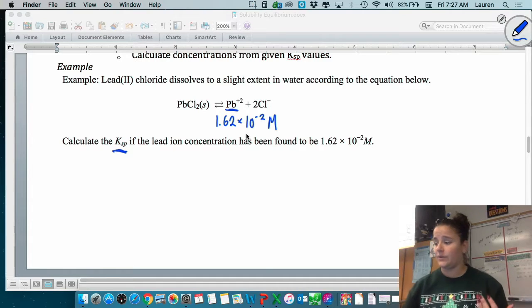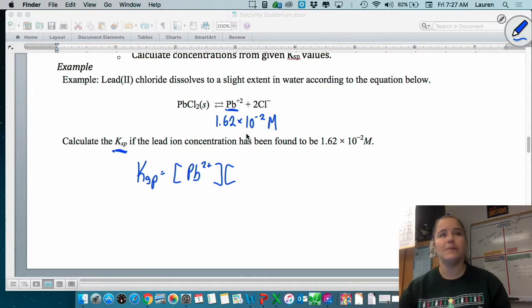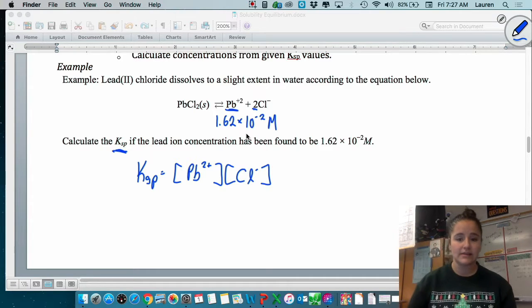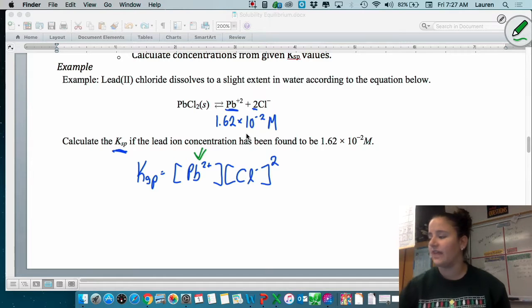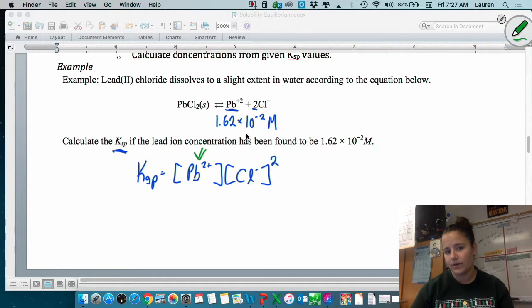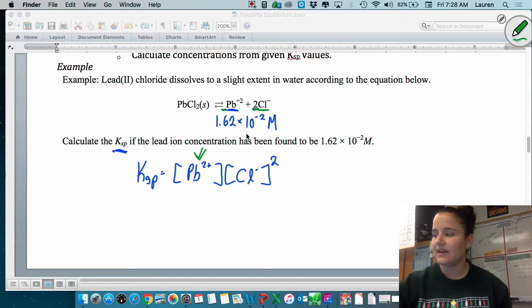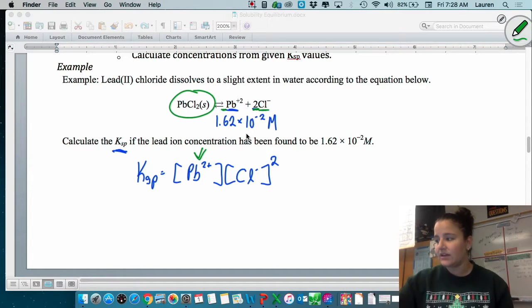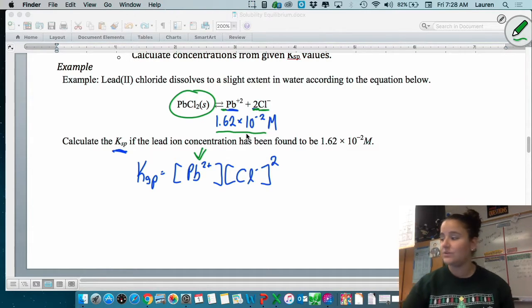First things first, we need to write our equilibrium expression. So our Ksp will be Pb2+ multiplied by Cl- squared. Now we can plug in our numbers. We know the value of the concentration of lead, but we're not given the concentration of chlorine, but we can find it out. Because there is two chlorines for every one lead, they all came from the same thing. They all came from this solid.